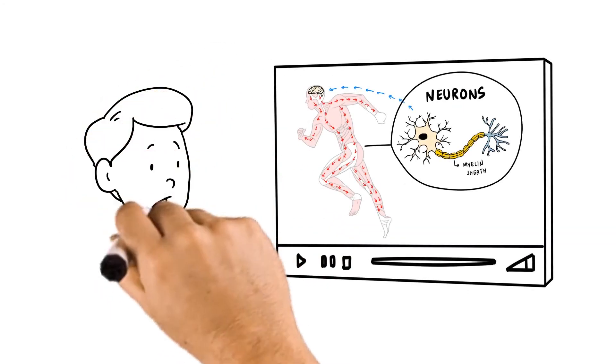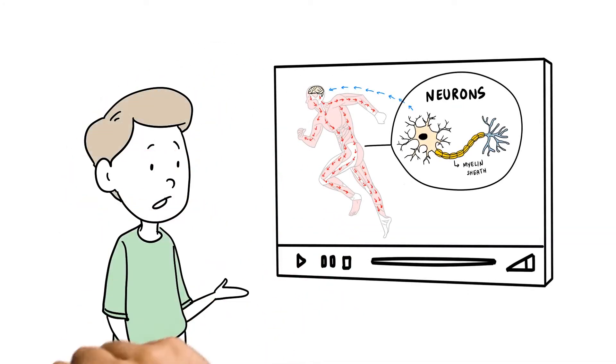As discussed in our GBS video, the nerves in your peripheral nervous system help you feel and move.